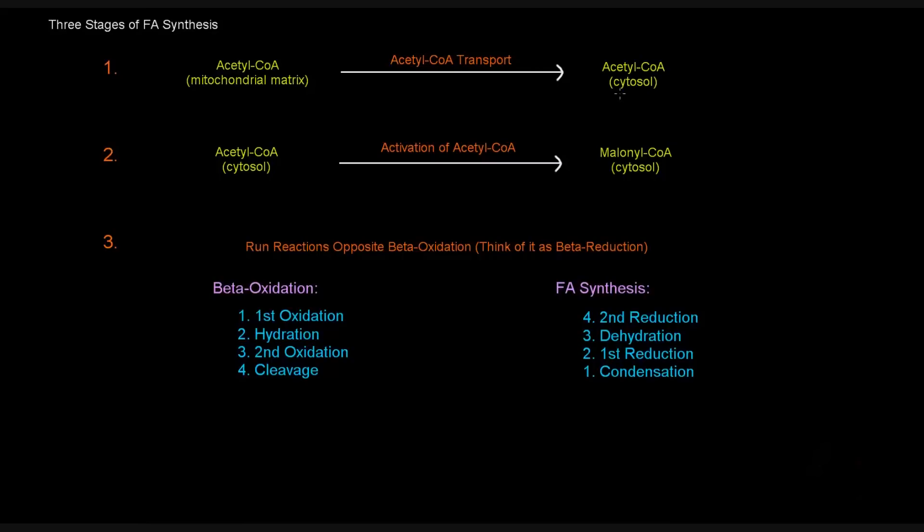So one of the first things we have to do is take the acetyl-CoAs from the mitochondrial matrix and transport them across into the cytosol. That's acetyl-CoA transport. Once the acetyl-CoAs are in the cytosol, we need to activate these acetyl-CoAs to malonyl-CoA, which occurs in the cytosol. This malonyl-CoA is the molecule that is committed to fatty acid synthesis, and it'll actually be the two-carbon donor. Once we have these malonyl-CoAs, we're going to link them together to make the fatty acid.